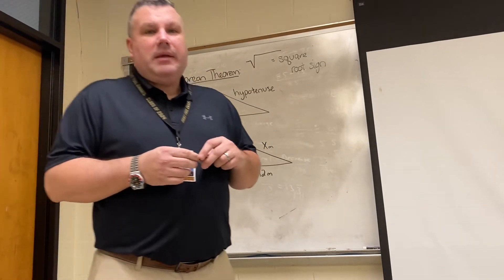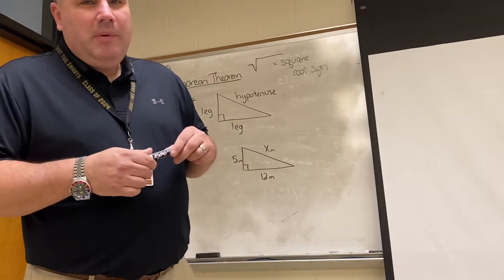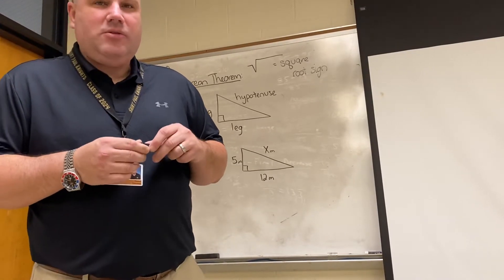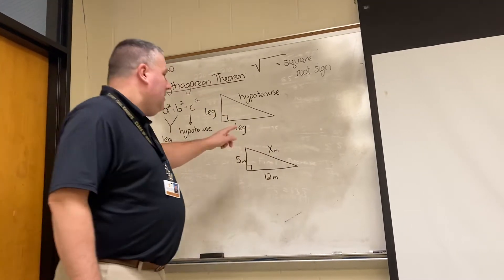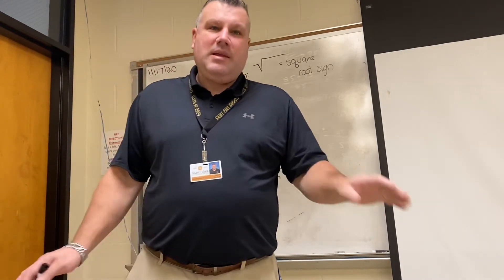Today we're going to be talking about the Pythagorean Theorem. The Pythagorean Theorem is a formula that you use when you know two out of the three sides of a right triangle. Notice that I said right triangle. This will only work with a triangle that has a 90 degree symbol in it. It will not work on any other type of triangle.